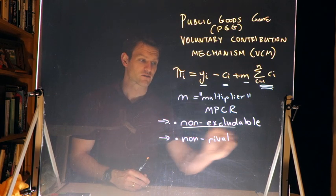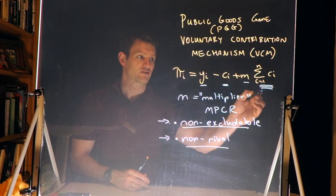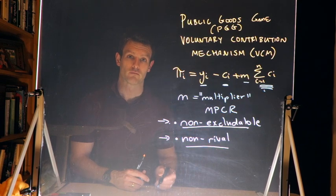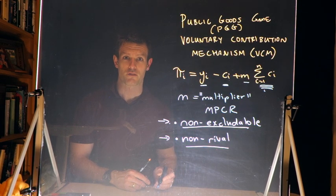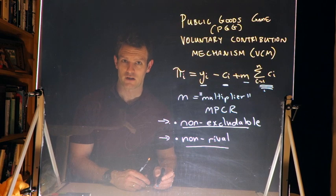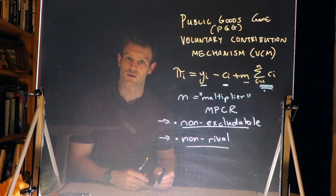Okay, so it's non-excludable and non-rival in terms of the benefits here of the public good. We're going to return to this payoff function in a moment and we're going to think about why this is a social dilemma in a second when we structure this with a 2 by 2 payoff matrix.